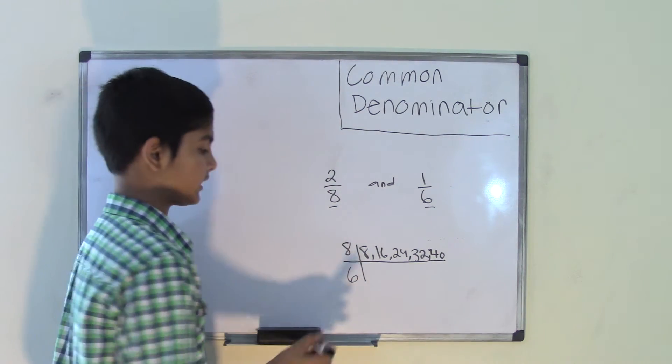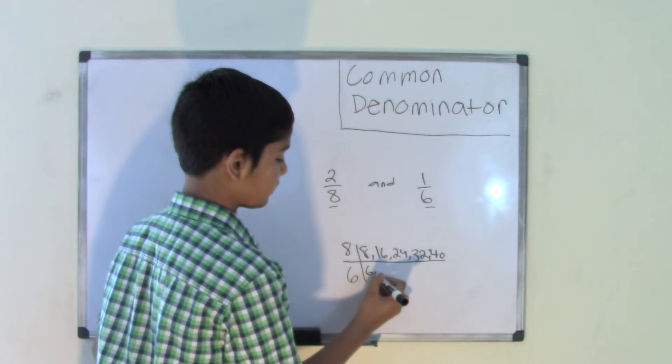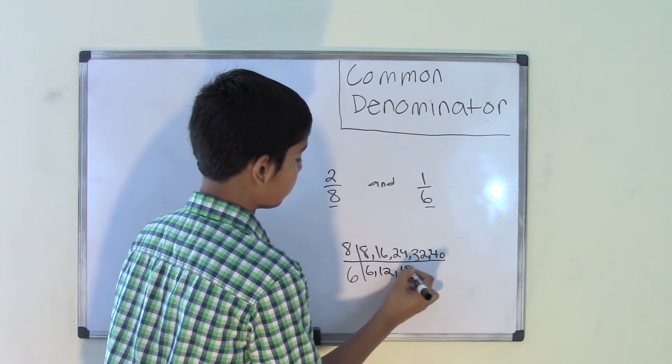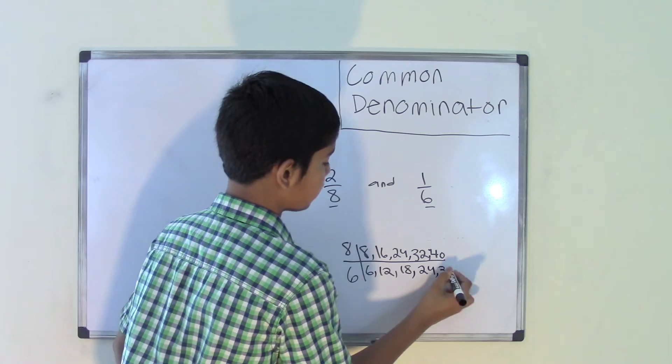Now let's list some multiples for the number 6: 6, 12, 18, 24, and 30.